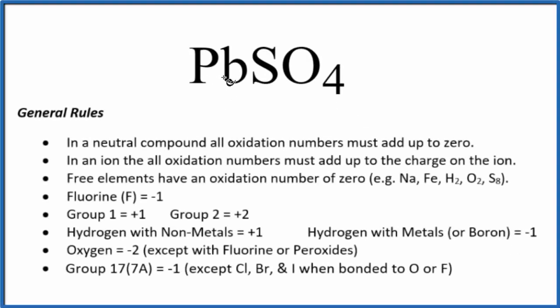To find the oxidation numbers for the lead in PbSO4, this is lead to sulfate, we use these rules here. First off, you'll note there's no negative or positive sign after the PbSO4. That's because it's a neutral compound, and all the oxidation numbers are going to add up to zero.